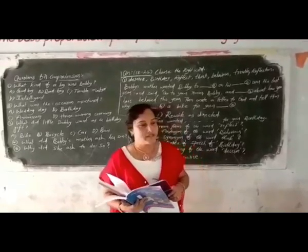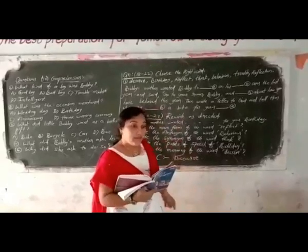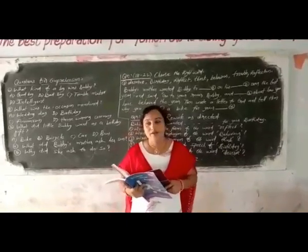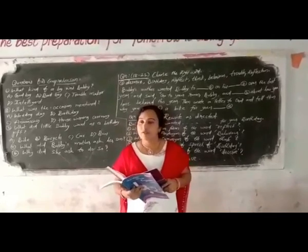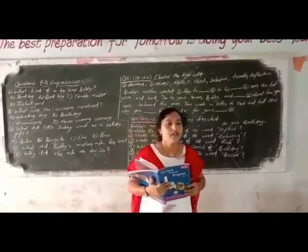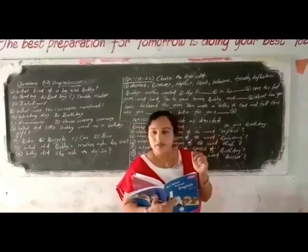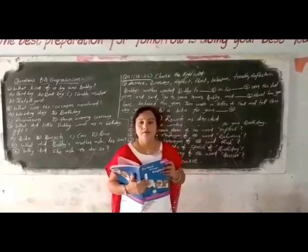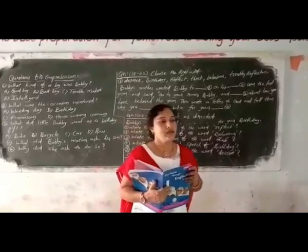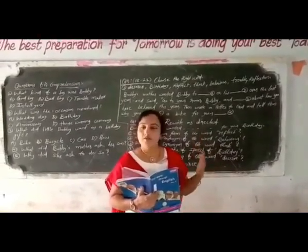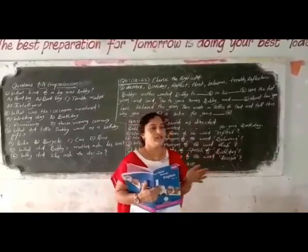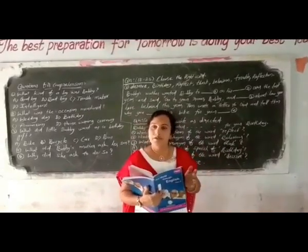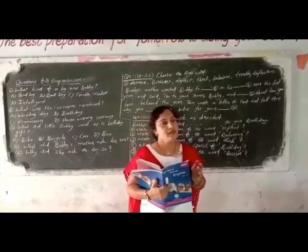The minor discourse: write a possible conversation between Bobby and his mother. Think about what happened in the 'Little Bobby' story — how Bobby replied, what mother wanted him to do, and what Bobby did. Frame one conversation and write ten exchanges — five each — a suitable and possible conversation between Bobby and his mom.